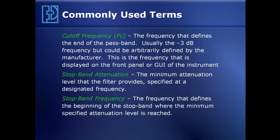Other terms we've already alluded to: the cutoff frequency, designated as F sub C, is the frequency that defines the end of the passband — usually the minus 3 dB frequency, but it can be arbitrarily defined by the manufacturer. This is the frequency displayed on the front panel or GUI software for the instrument.